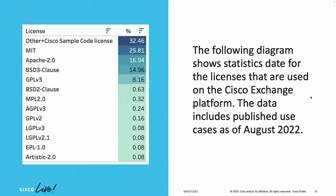The following diagram shows license statistics from the Cisco Code Exchange platform, where we gather all open source projects related to Cisco technologies. The data covers published use cases as of August 2022. The most popular licenses include MIT, Apache 2.0, BSD, and GPL. Cisco's own sample code license is also common but is not considered open source.